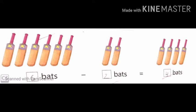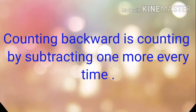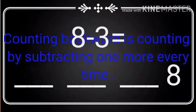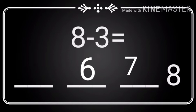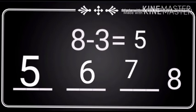Let's move to our second topic, that is subtraction by counting backward. What is counting backward? Counting backward is counting by subtracting one more every time. Just have a look at this example. Eight minus three. So before eight, here are three blanks. What we have to do? We have to come three steps back. Before eight comes seven, before seven comes six, and before six comes five. So counting back: eight, seven, six, five. We have taken three steps back, so our answer is five. You will also do this work on your book page number 43.